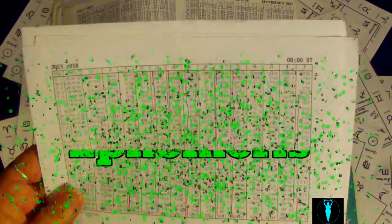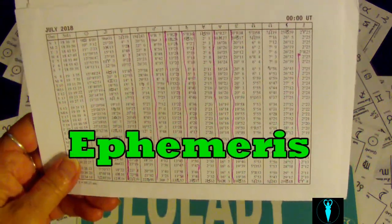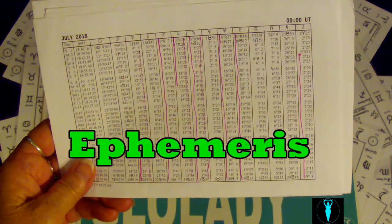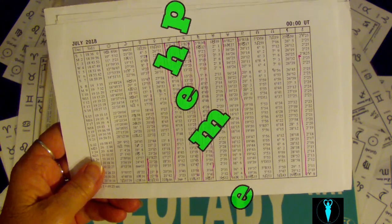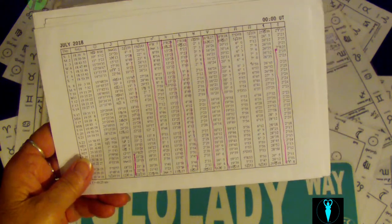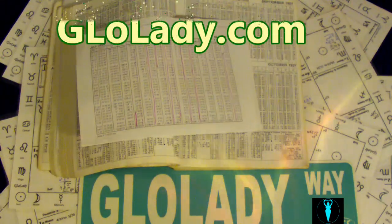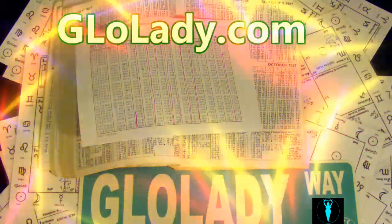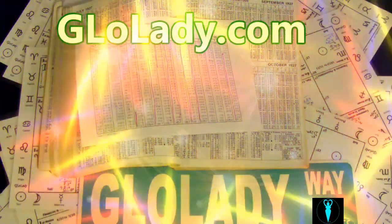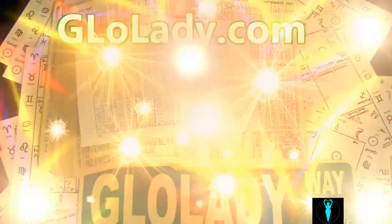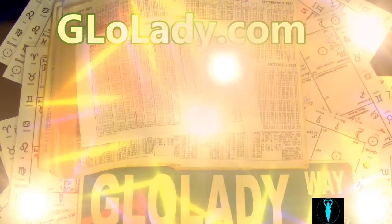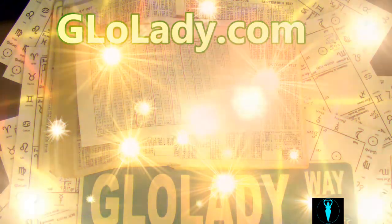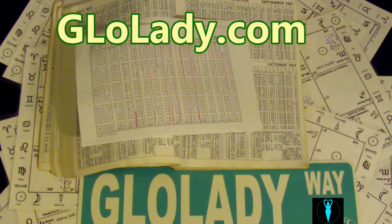Then, getting the ephemeris of where the planets are on the date, month, or year that you are questioning, you can place them on top and really see how much they are going to affect your life...